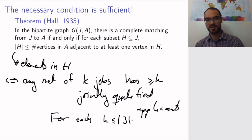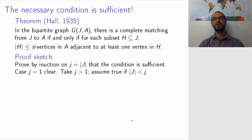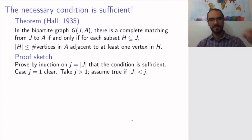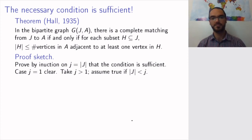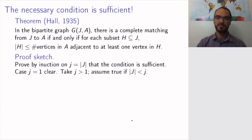To prove this theorem, the only-if part is clear — the condition is necessary. We want to show that if any set of k jobs has at least k jointly qualified applicants, then we can find a complete matching. We'll prove that by induction on the number of jobs. The base case: if we have one job, the condition says this one job has at least one qualified applicant, and obviously you can fill this job. Now assume you have more than one job, and assume the implication is true if we have fewer than j jobs — that is, the Hall condition guarantees a complete matching for fewer than j jobs.